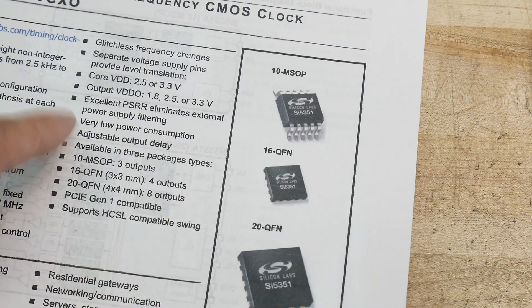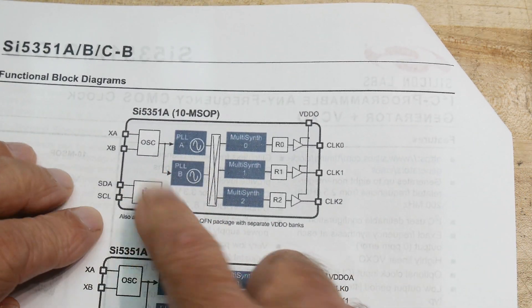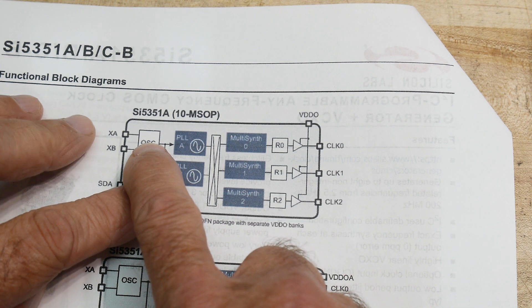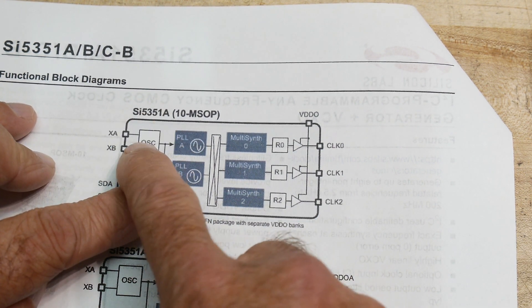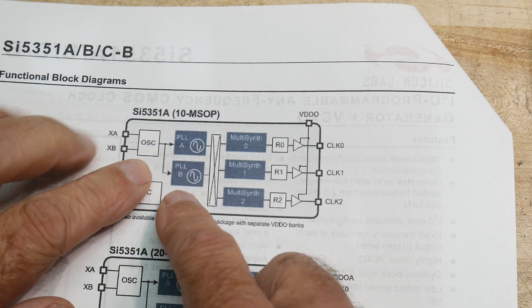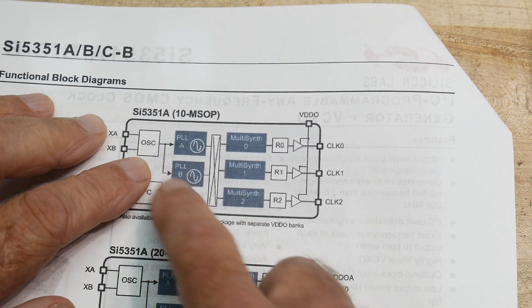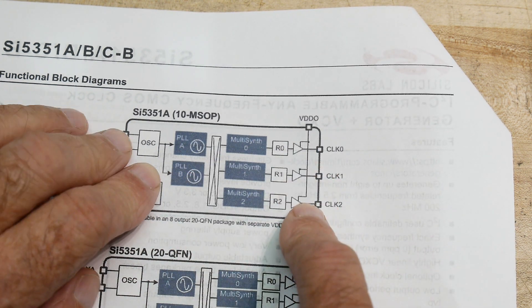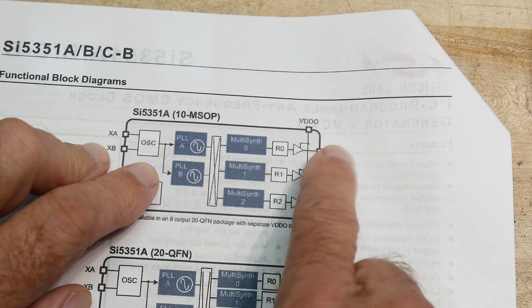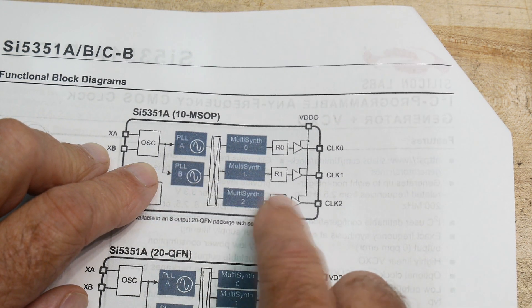So one of the interesting things here is it generates its clock a strange way. It has an oscillator. And you can put a crystal out here, and so you have a crystal oscillator, or you can bring in your own frequency. And there's two phase lock loops. So you can set up one phase lock loop for one frequency, and a second phase lock loop for a second frequency. But there's three outputs.